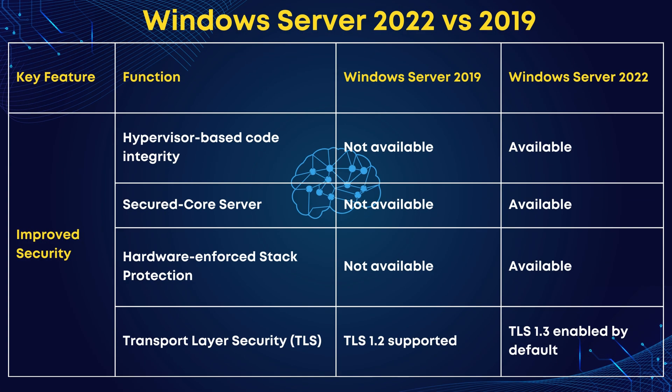Let's start the comparison of security features. Windows Server 2022 has hypervisor-based code integrity. This feature ensures that only trusted code runs on the hypervisor, bolstering the security of virtual machines and the underlying server infrastructure. It's essentially a safeguard against unauthorized or malicious code execution within your virtualized environment.